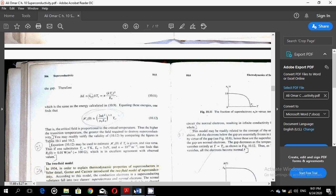Equation 10.12 may be used to estimate hc at 0 if tc is given and vice versa. Thus, if one substitutes tc is equal to 5 degrees K and the Fermi energy ef is equal to 5 electron volts and the typical value of n is 10 to the power 28 per meter cube, one finds that Bc at 0 is equal to 0.01 Weber per meter square, which is 100 gauss, which is an excellent agreement with the observed values.